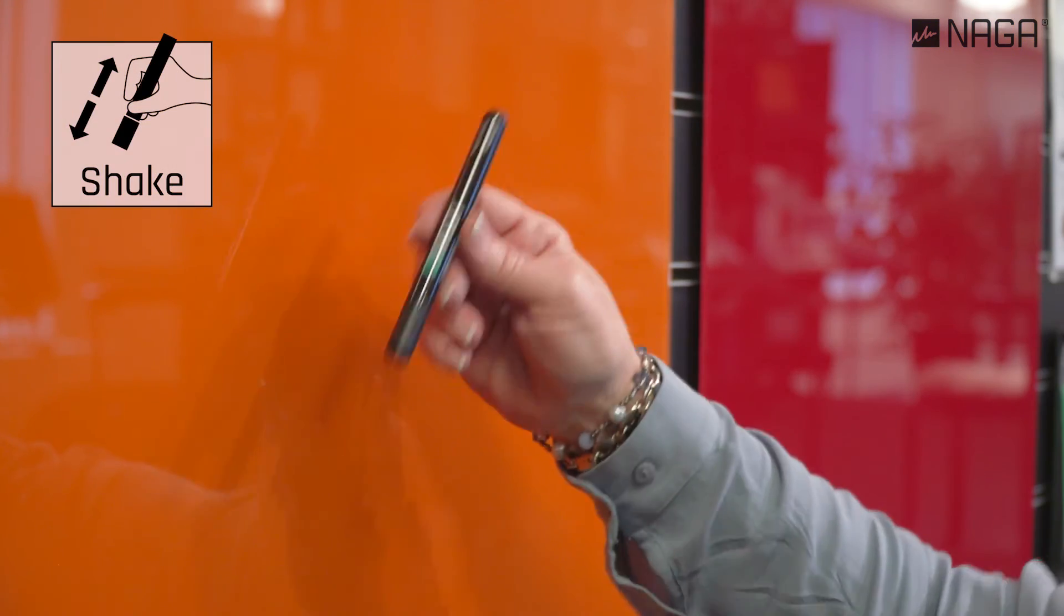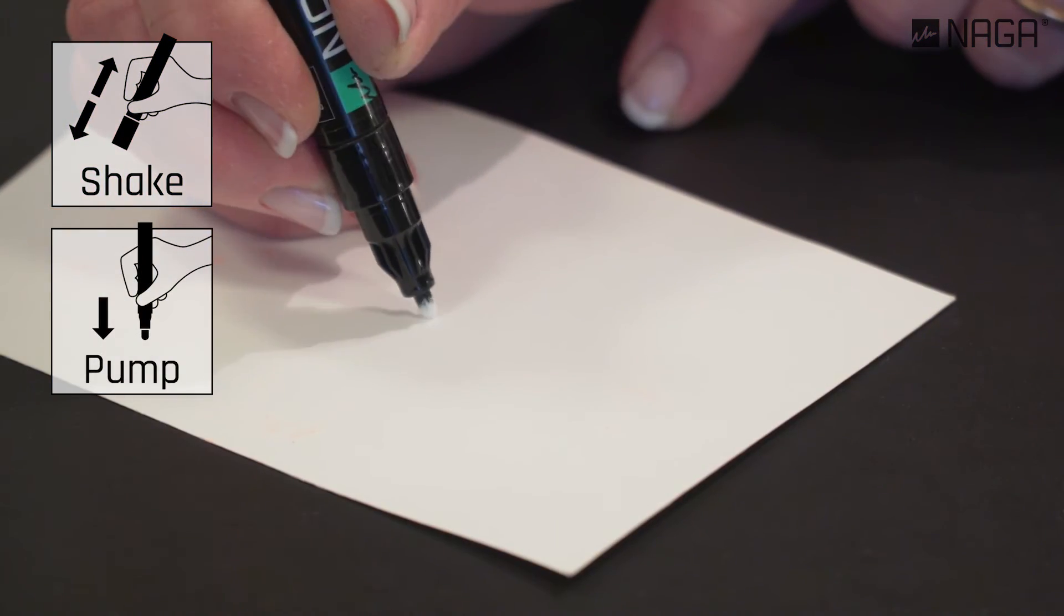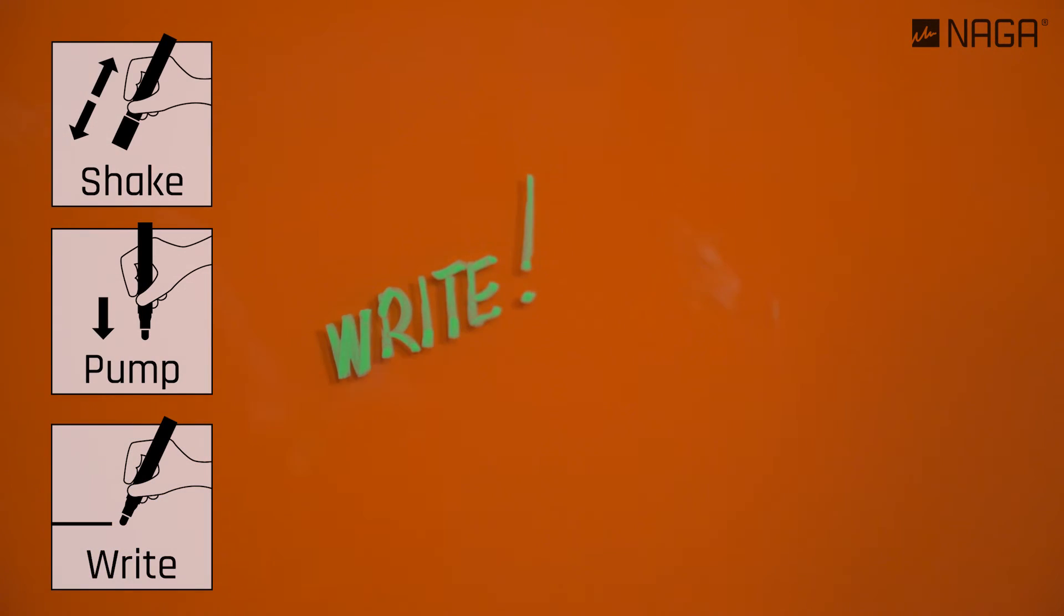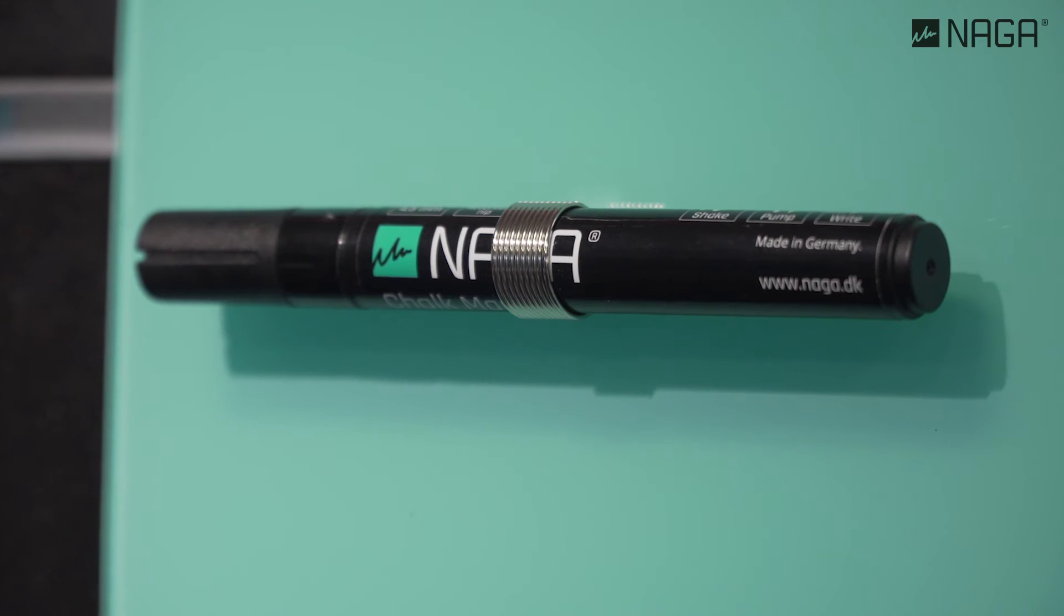Shake well with cap on. Pump until the nib fills with ink. Write or draw. If your marker dries out, shake it and pump the nib again.